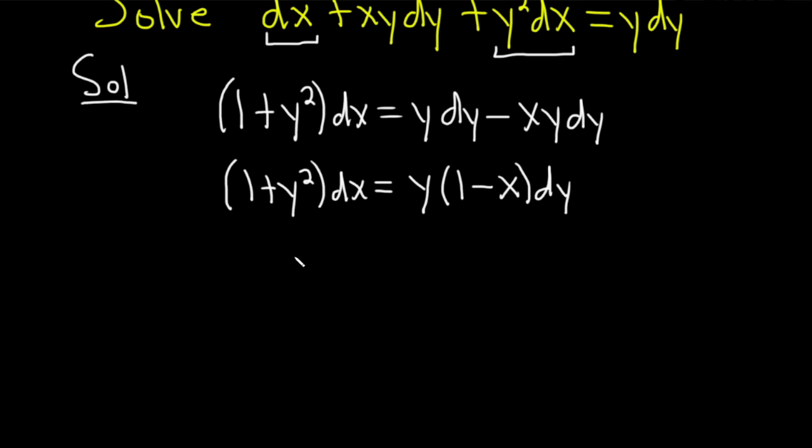So this 1 minus x is going to come over here, so we get dx over 1 minus x. This 1 plus y squared is going to come over here, so we're going to get y over 1 plus y squared dy, just like that.